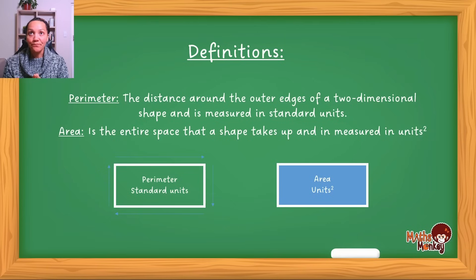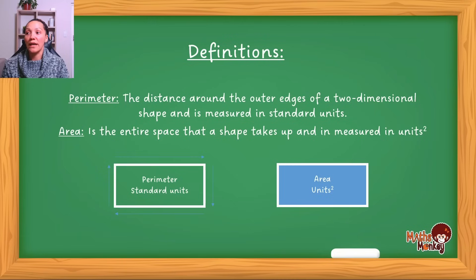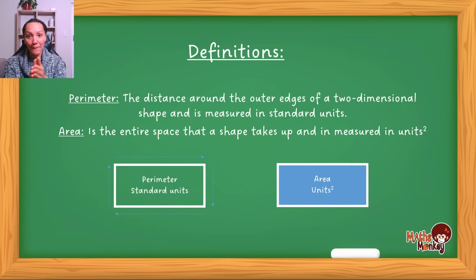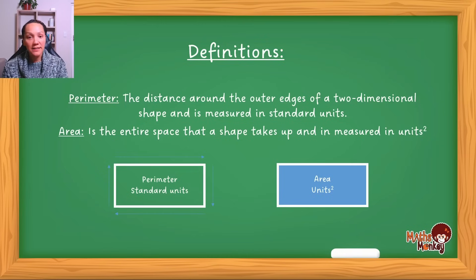Instead of saying 'a rectangle,' they'll say it's a soccer field, or instead of saying it's a circle, they'll say it's a can of Coke. So you're going to have to take what you are being taught and apply it to specific scenarios. The first thing is making sure you understand the difference between perimeter and area.